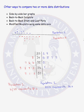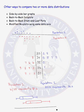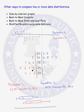Another way to compare two or more data distributions is by using modified box plots on the same data axis. Looking at the two modified box plots, you can compare the shape, the center, the spread of the distribution, and whether there are outliers — just as you can with back-to-back stem and leaf plots or back-to-back dot plots.